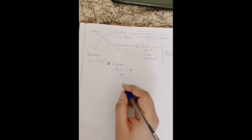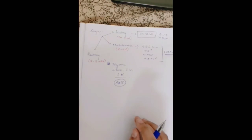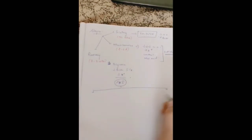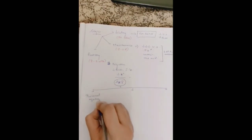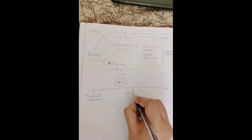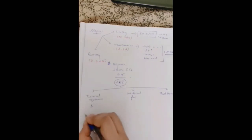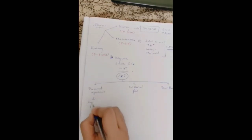Acute tubular necrosis leading to acute kidney injury is very alarming. Looking at the outline of AKI, the causes can be classified as pre-renal azotemia, intrinsic renal failure, and post-renal. Pre-renal may be due to decreased blood flow to the kidney, such as hypovolemia, reduced cardiac output, or decreased effective circulation.